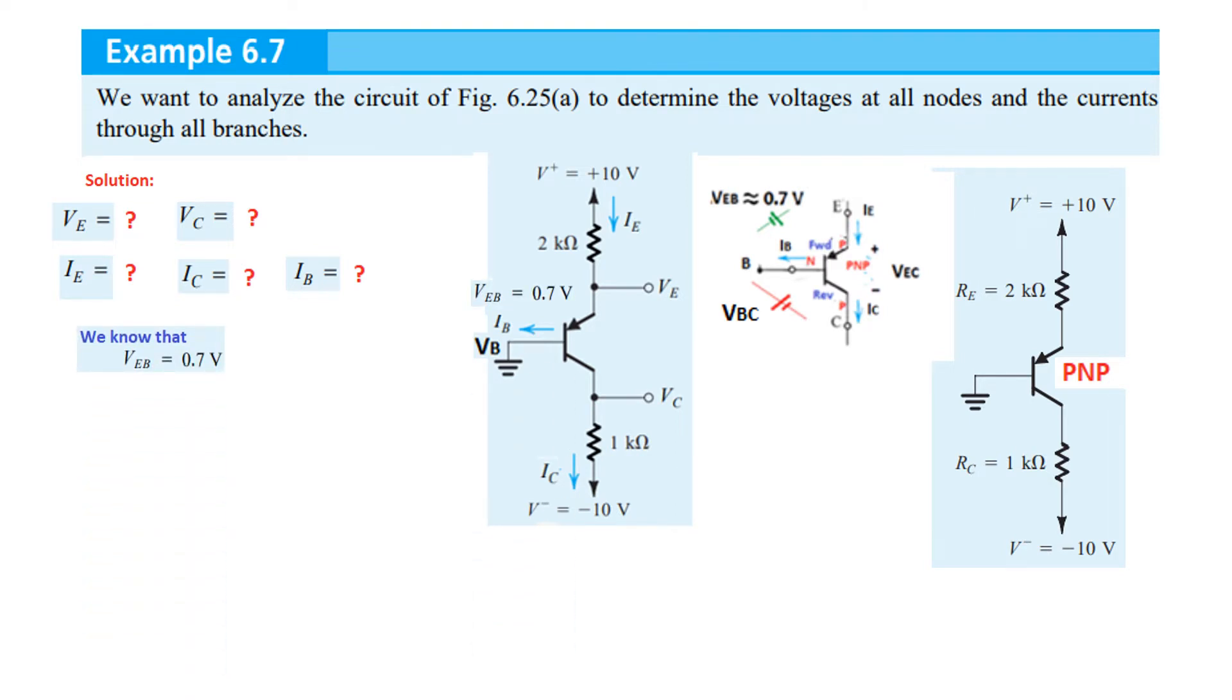We know that VEB is 0.7 volt. This is assumed, it is always 0.7 volt base emitter. And from here, we can find VE. VE will be VB plus this voltage or from here, we can write that VE minus VB will be VEB. So, from here, VE can be calculated to be 0.7 volt, VEB 0.7, VB is ground 0.